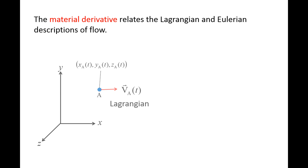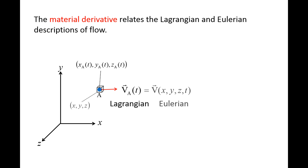Here we have a fluid element labeled A. As discussed in a previous video, the velocity of this fluid element is a function of time in the Lagrangian description, since the fluid element's coordinates change in time. However, if we use the Eulerian description, the velocity is a function of time and space.